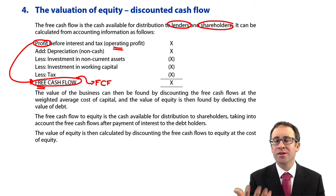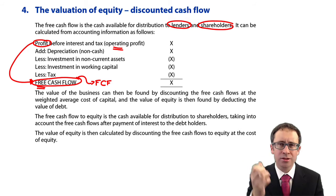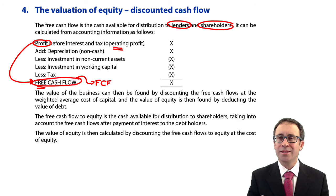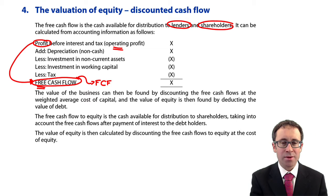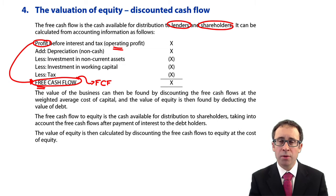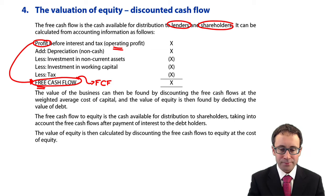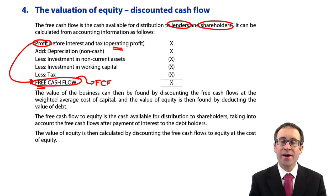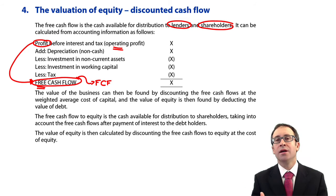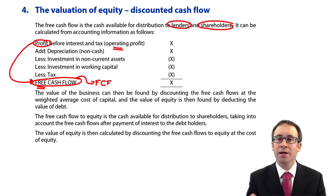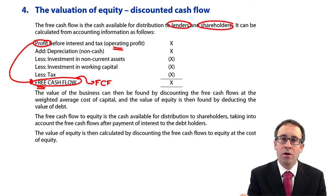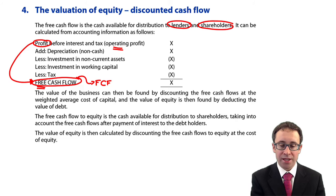At this level, we tend not to see anything more complicated than depreciation, so we're unlikely to see impairments, amortization, or adjustments such as profits or losses on disposal. We simply take the operating profit and add back any depreciation. We then deduct any investments in non-current assets, because that is cash spent to help generate those profits — and once that cash is spent, it's not available to the debt holders or shareholders.